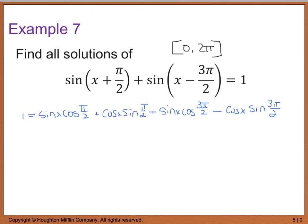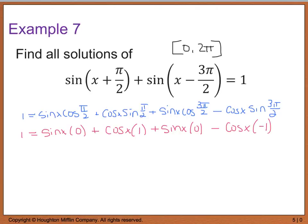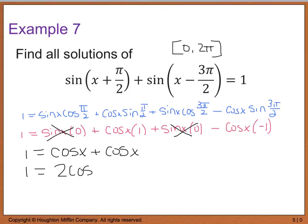Now I simplify. We have 1 equals sine of x times 0 plus cosine of x times 1, plus sine of x times 0 minus cosine of x times negative 1. The two sine x terms cancel, leaving 1 equals cosine of x plus cosine x, so 1 equals 2 cosine x.